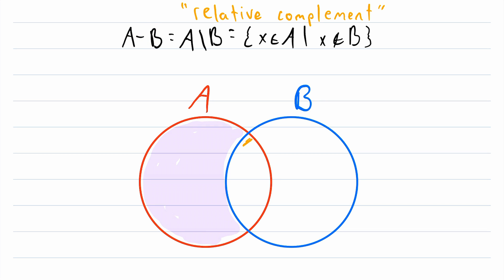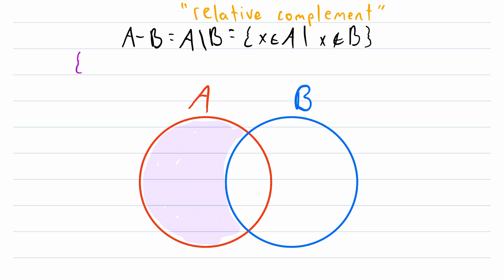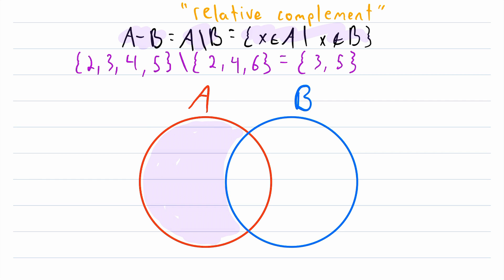That is basically what we're doing — we're taking all of the elements that are in B out of A, which leaves us with the remaining piece. We could also shade the relative complement of A with respect to B: all elements that are in B but are not in A. Notice that this is our first operation that is not symmetric — the relative complement of A with respect to B is not necessarily equal to the relative complement of B with respect to A. Here is an actual example before we move on.